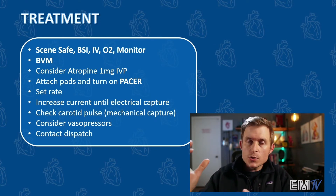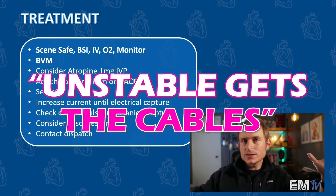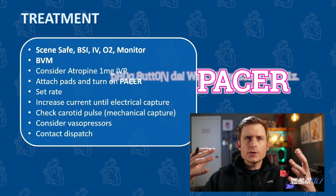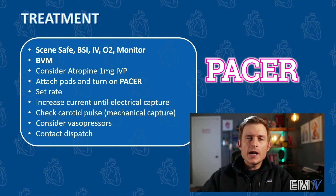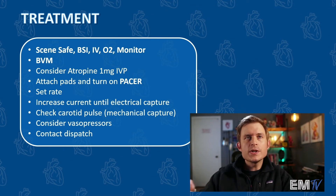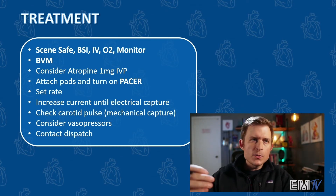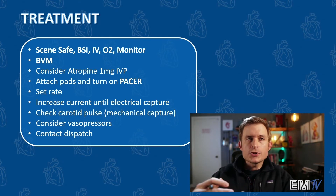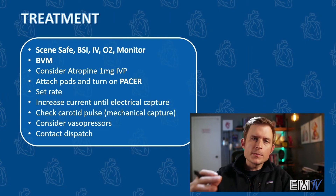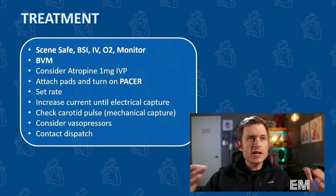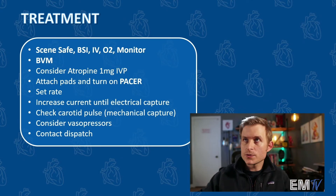However, as the old saying goes — unstable hits the cables. We're going to attach our pads, turn on the pacer function on our monitor, and then we'll set the rate. You can set the rate anywhere between 60 and 100 BPM. Once you've done that, you'll increase the current until you achieve electrical capture. And then once you've got electrical capture, you'll check a carotid pulse to assure mechanical capture. At this point you could say rapid transport, and as an evaluator, I would give you full points for this card.